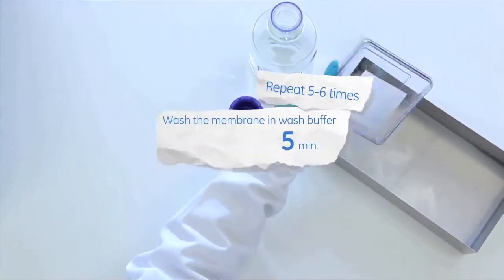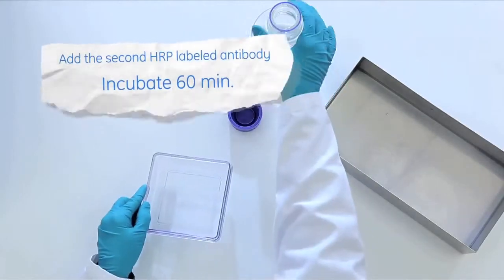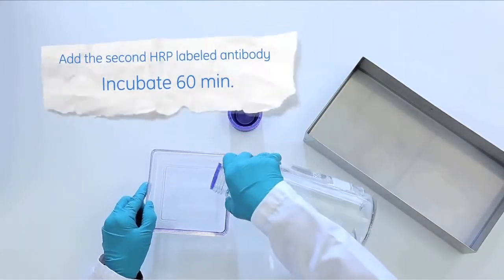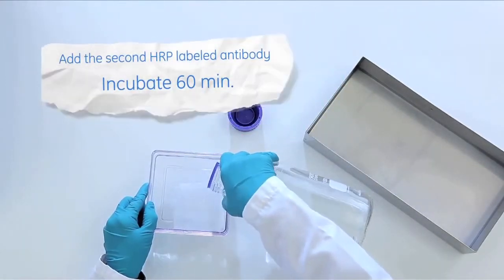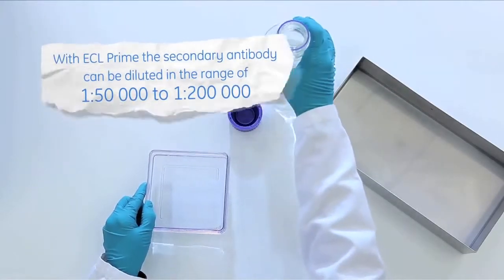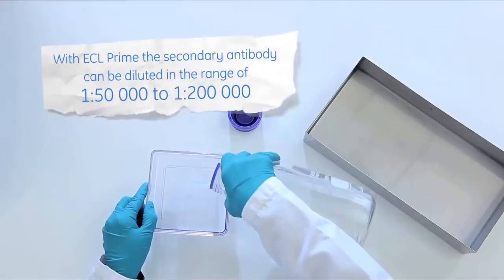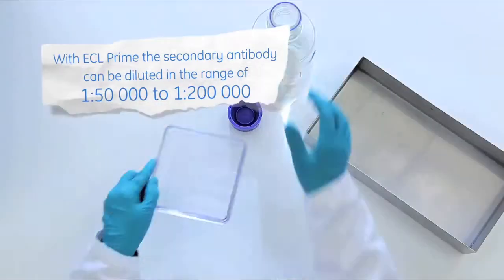Add the second HRP-labeled antibody to the membrane and incubate for 1 hour. When using ECL Prime, the secondary antibody can be diluted in the range of 1 to 50,000 to 1 to 200,000.